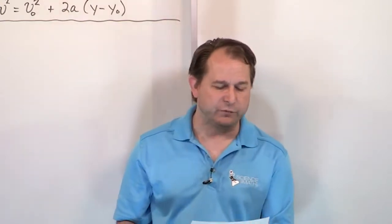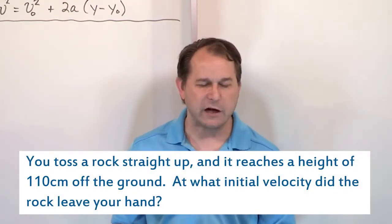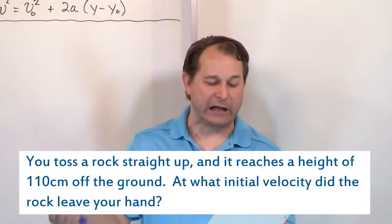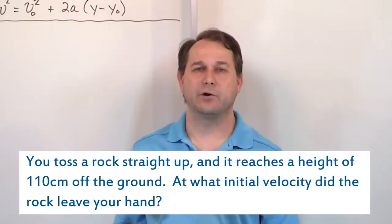So your problem says you toss a rock straight up and it reaches a height of 110 centimeters off of the ground. What is the initial velocity, or what initial velocity did the rock leave your hand?